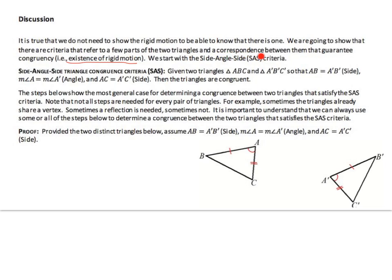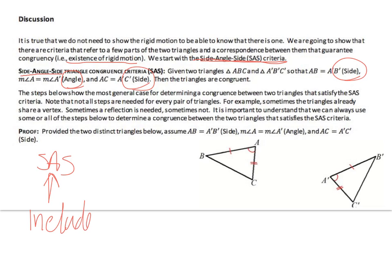We start with the side angle side criteria — the side angle side theorem or the side angle side rule. Given two triangles ABC and A'B'C', we know that AB equals A'B' (one side), the measure of angle A equals the measure of angle A' (the included angle), and AC equals A'C' (the other side). Note that we went side, then angle, then side on purpose — the angle is called the included angle because it is between the two sides.